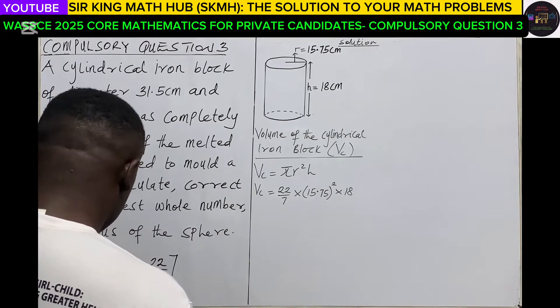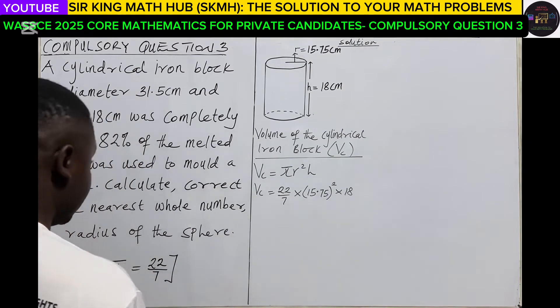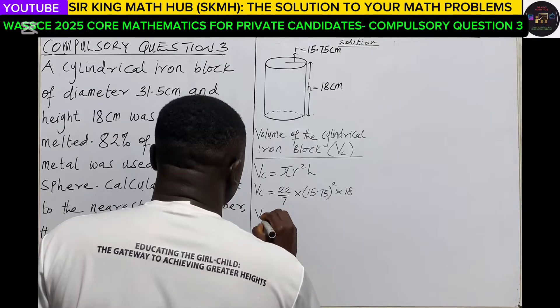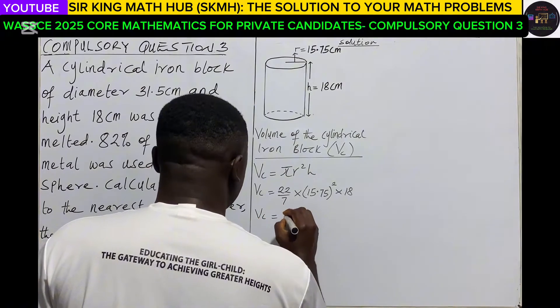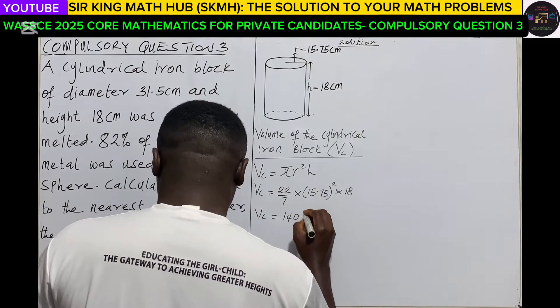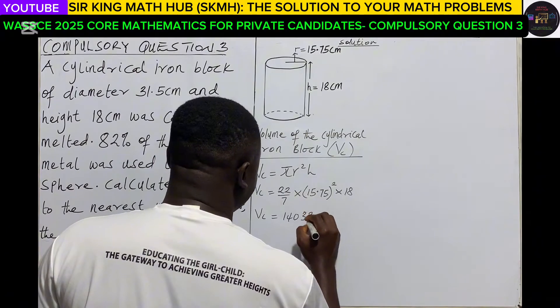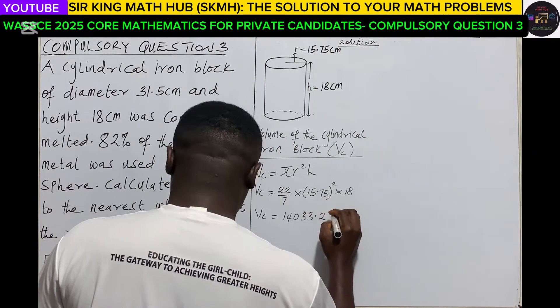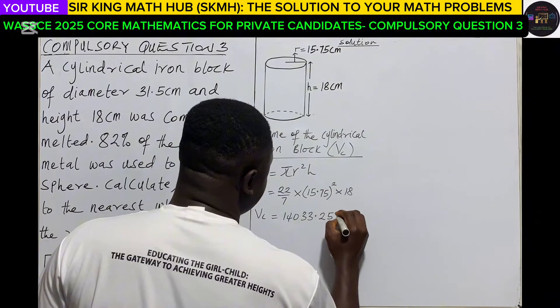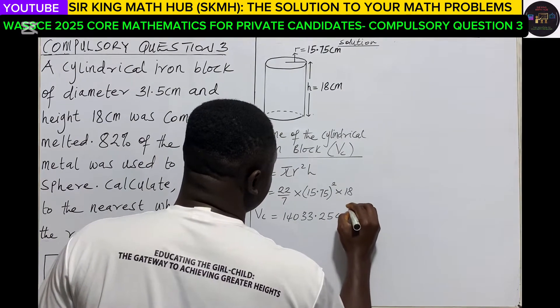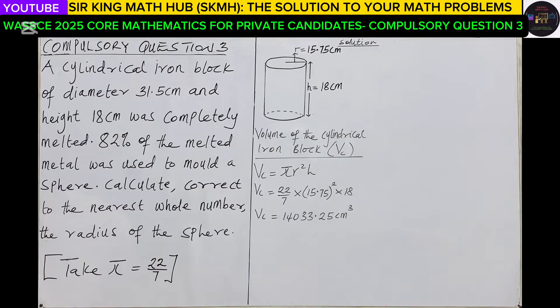Let's evaluate this: 22/7 multiplying 15.75 squared multiplying 18. We have the volume as 14033.25. Remember this is volume, so the unit will be in centimeters cube.